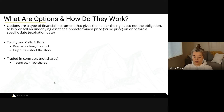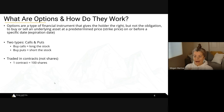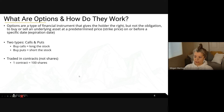Options are traded in contracts, and each single contract holds 100 shares — meaning that at expiration, if you were to let the contract turn into shares, it would be similar to having 100 shares of a position.